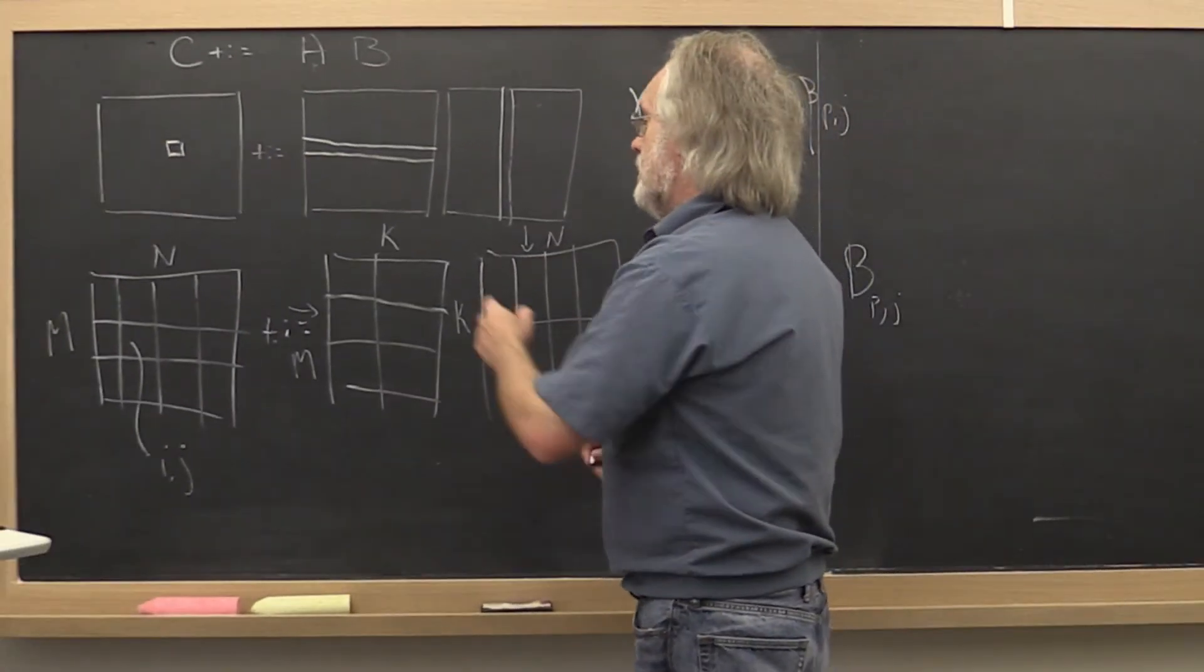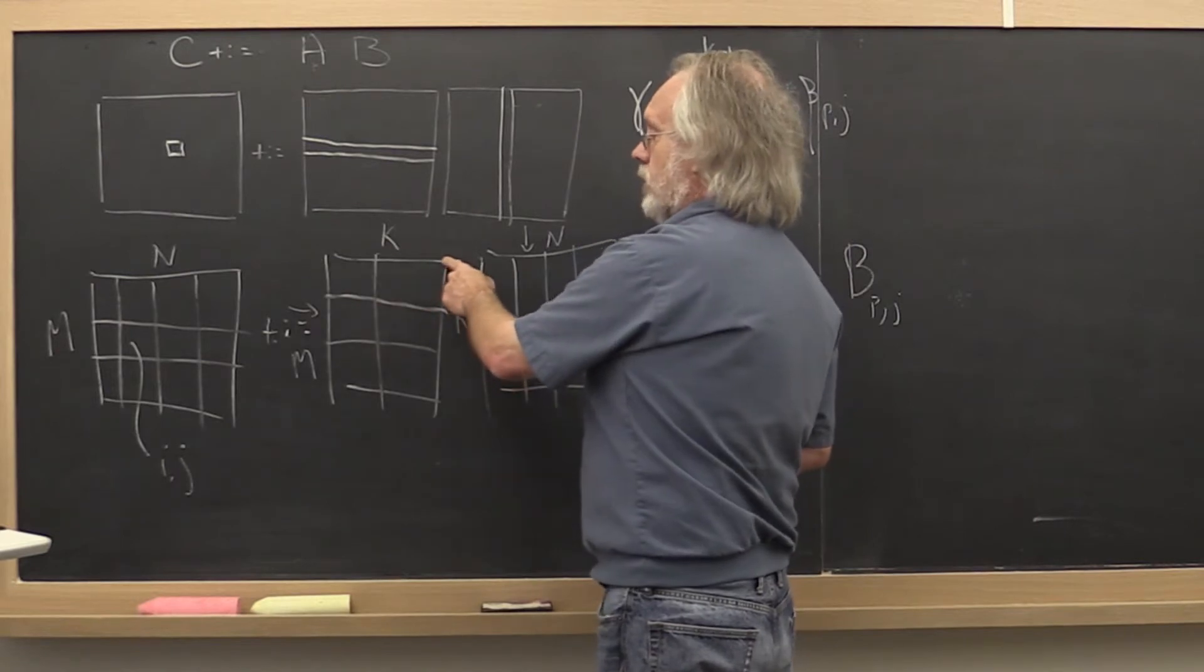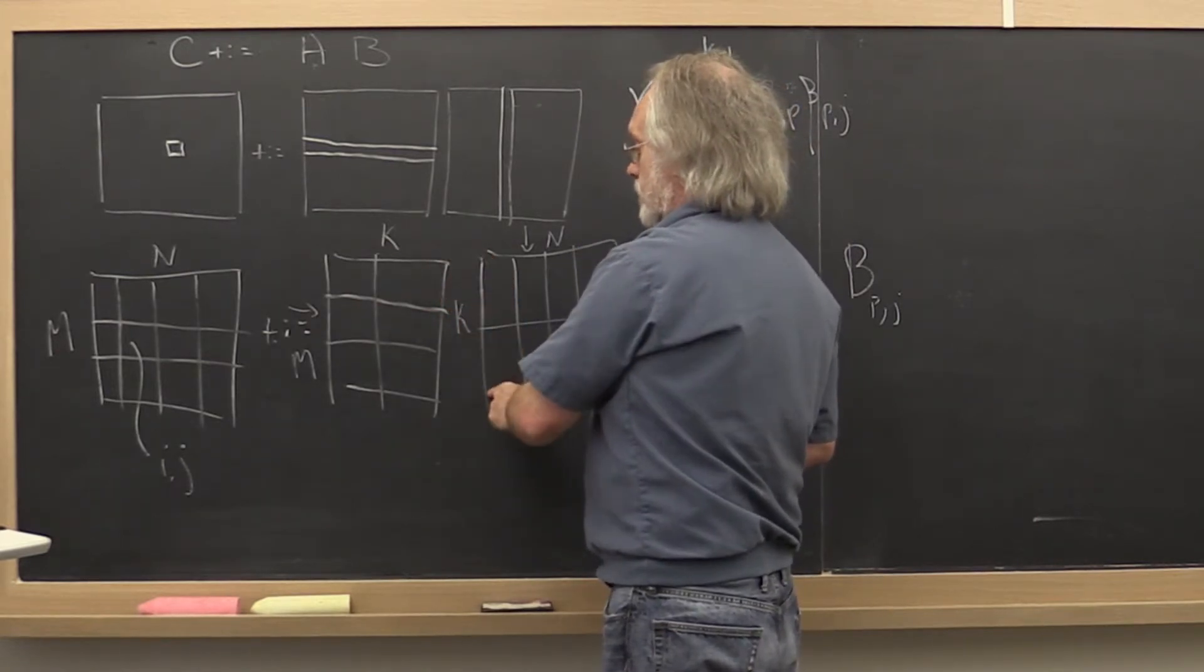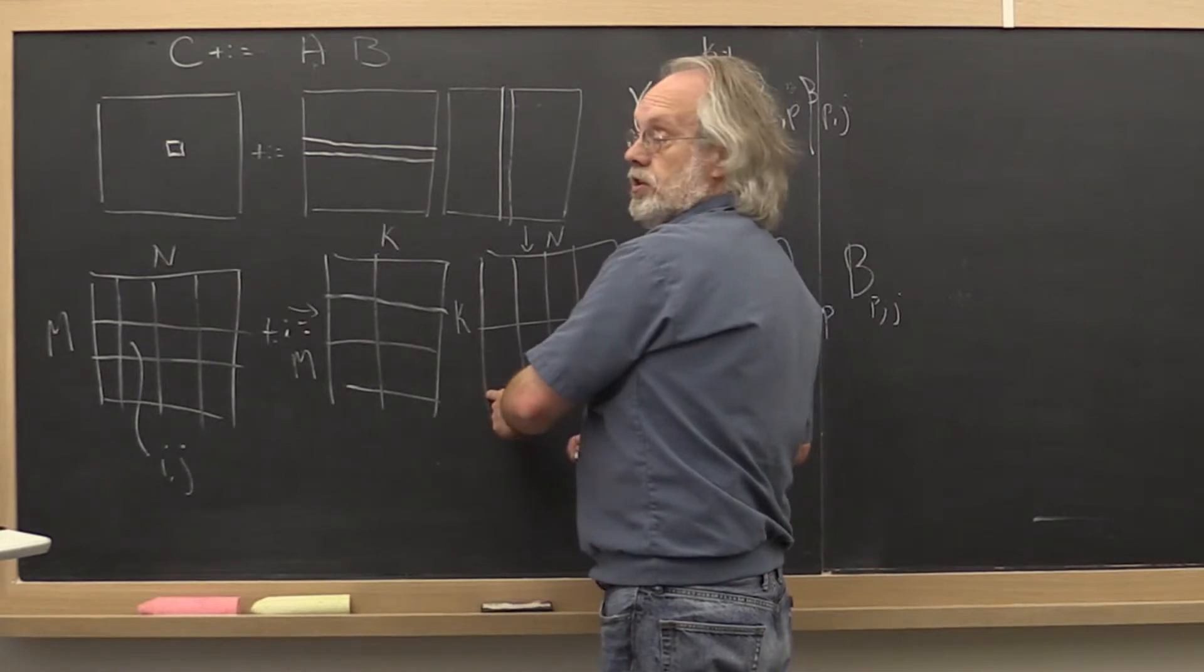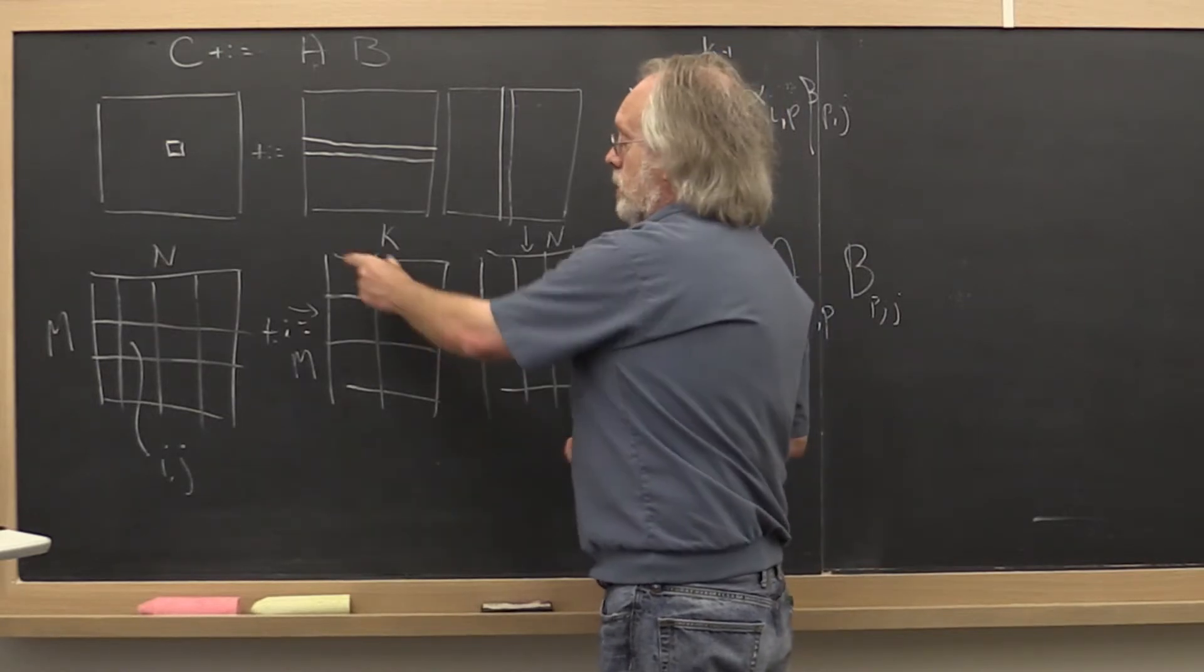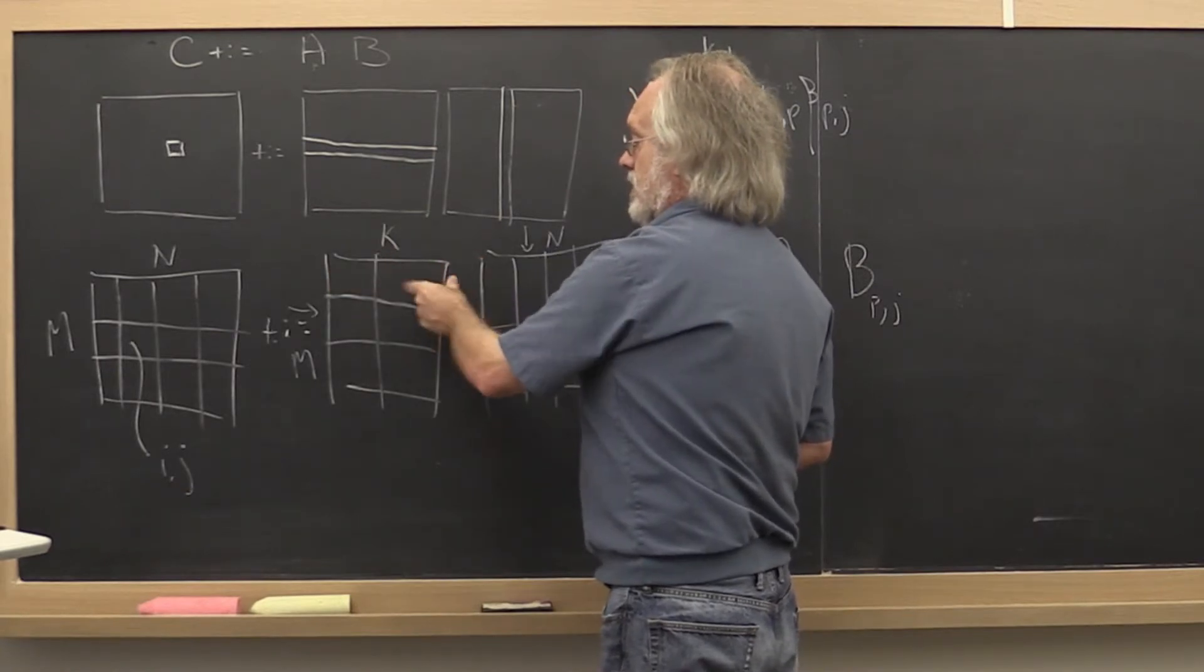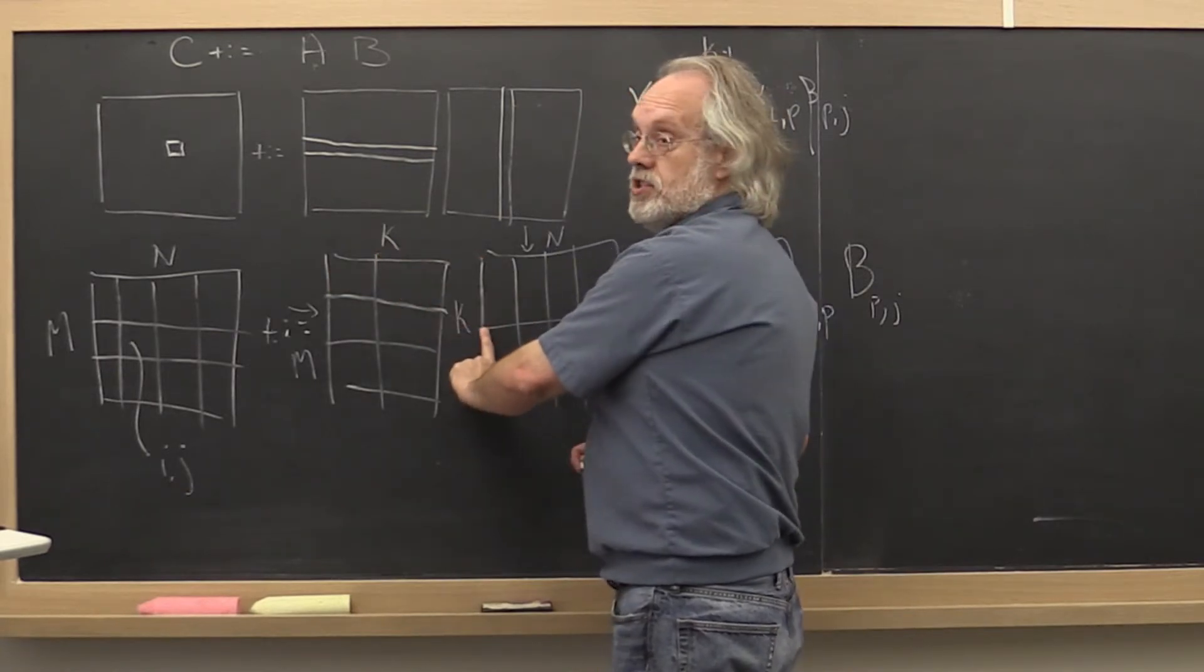So what does that mean? Not only does the number of blocks in the column dimension that you encounter in A have to match the number of blocks in the row dimension of B, but the sizes of the sub-matrices and they have to appropriately match up as well.